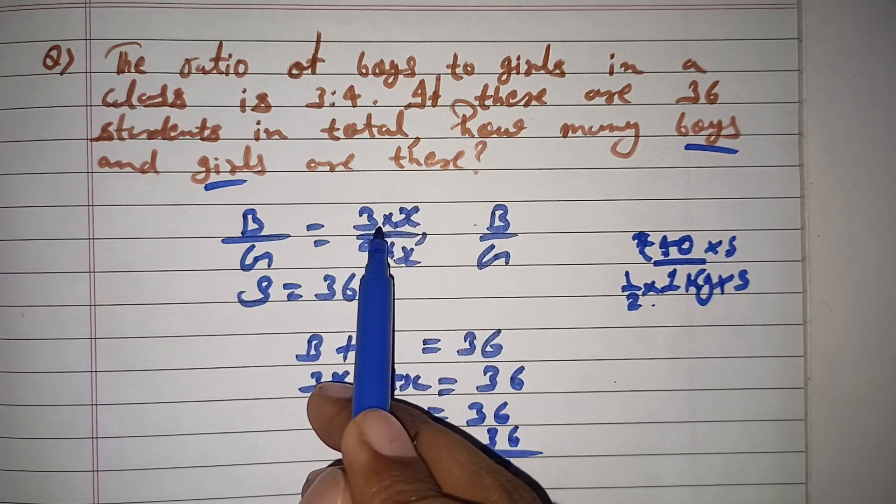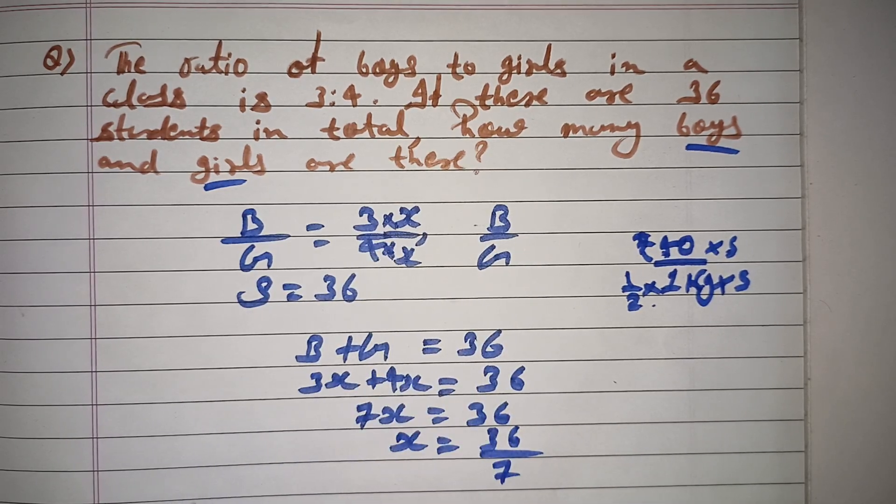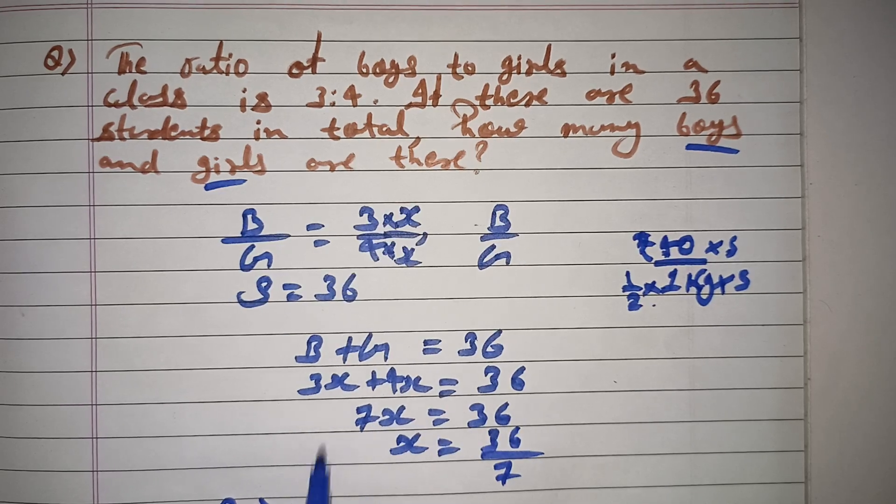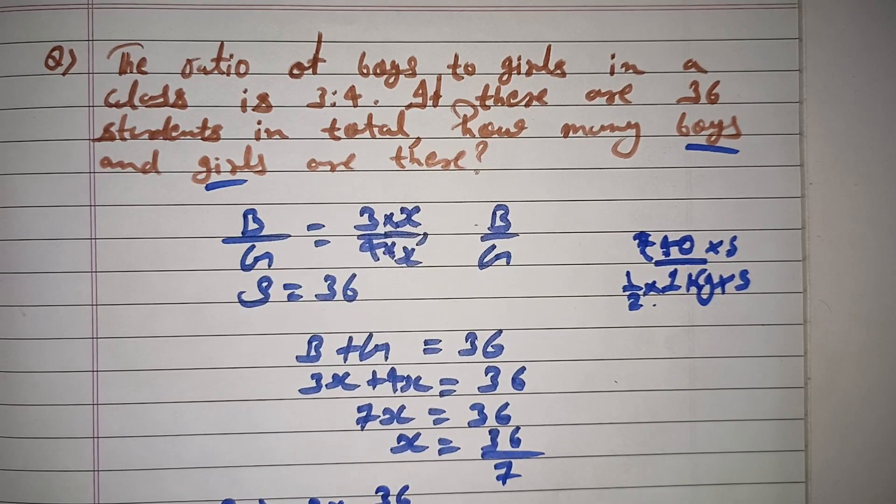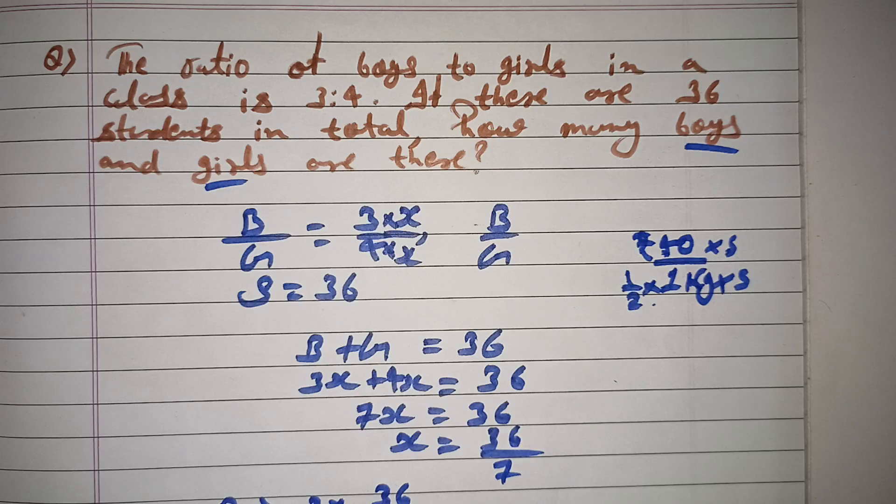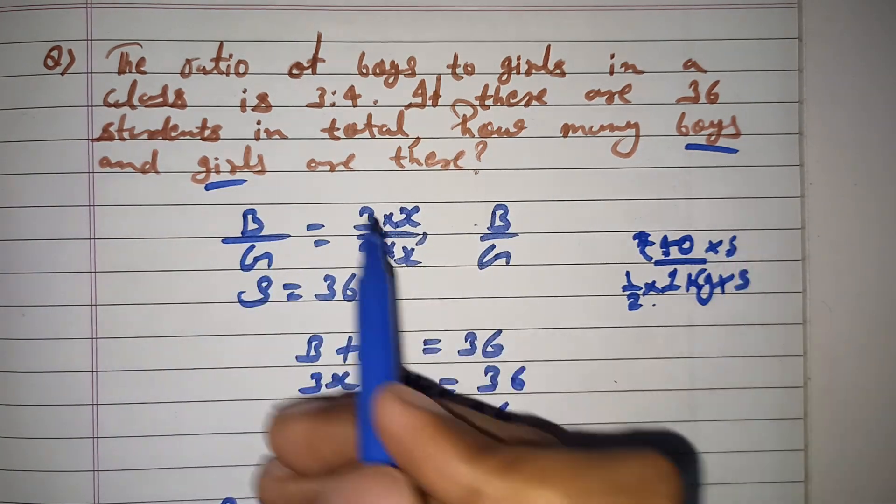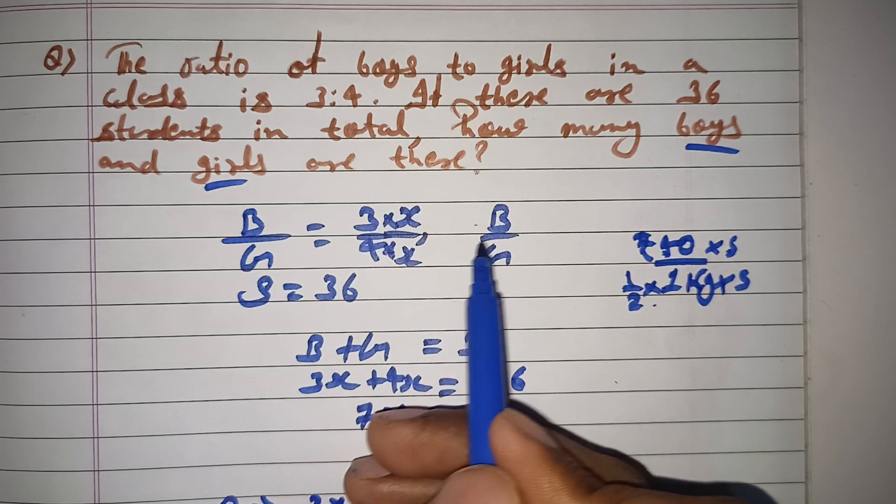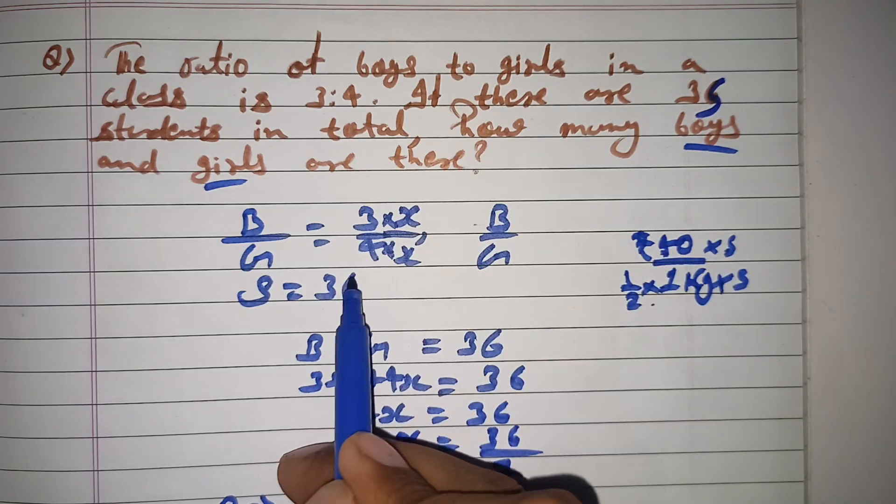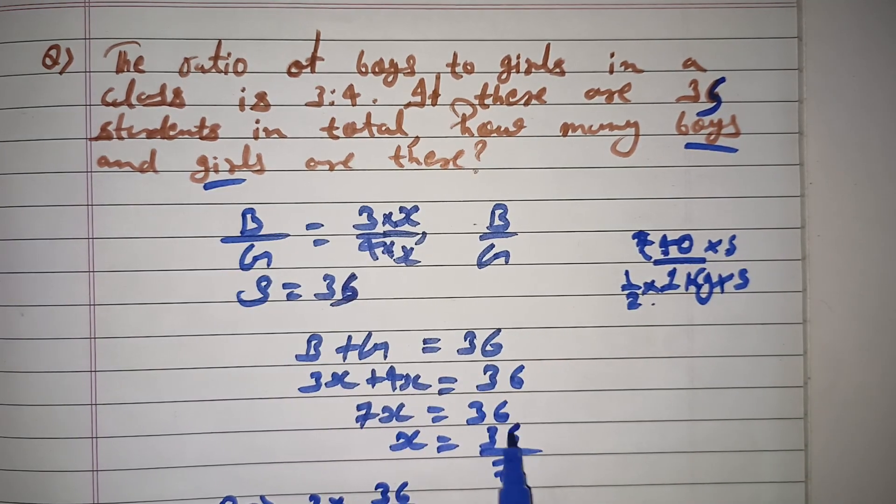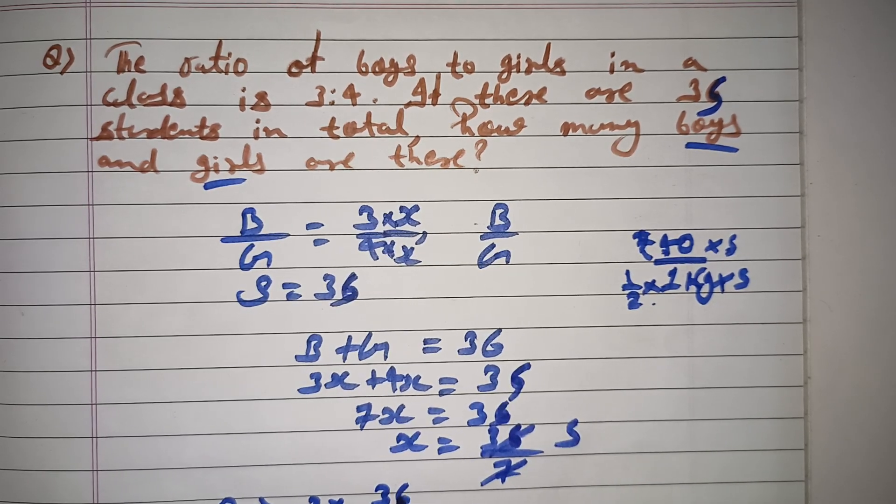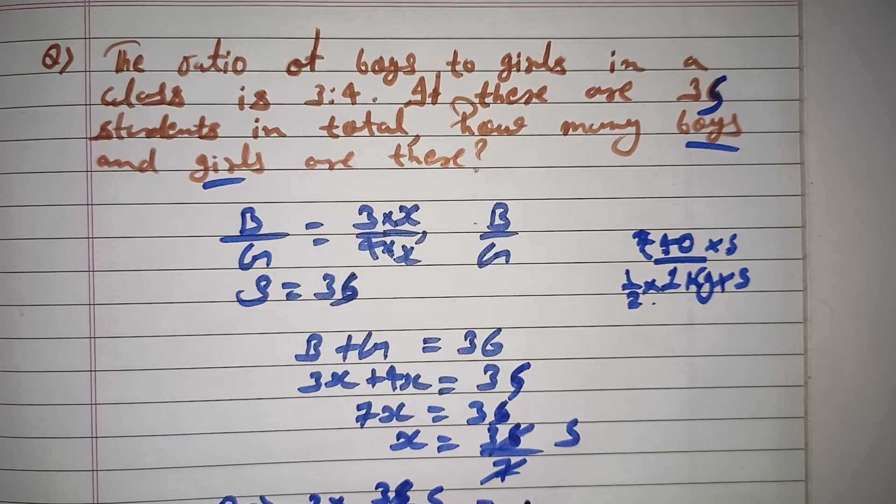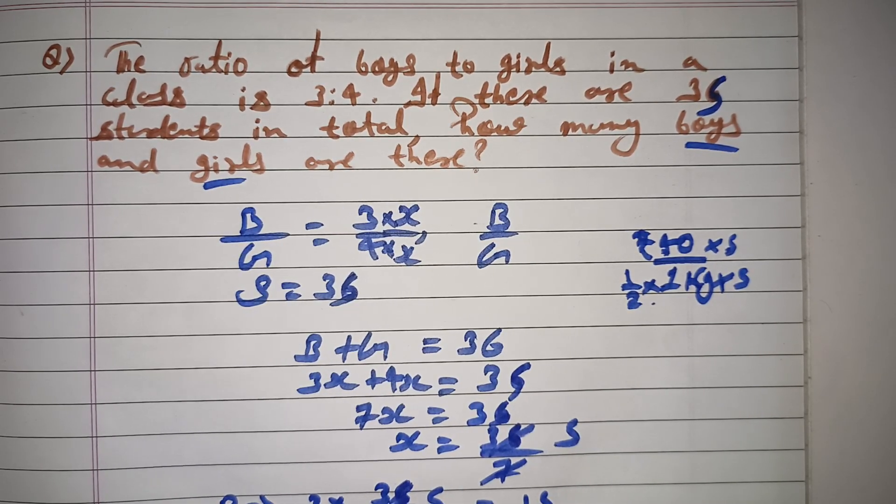X value is found. Boys, how many? We said 3x. Now 3 times x value, which is 36 by 7. Here I'll use 35 to make it easier. So total boys: 35 divided by 7 equals 5, times 3 equals 15 boys.